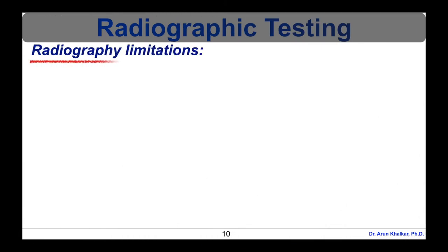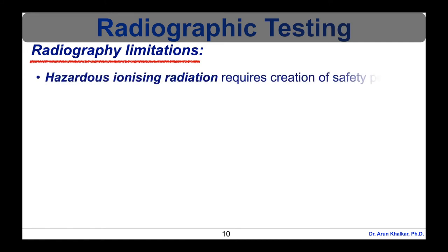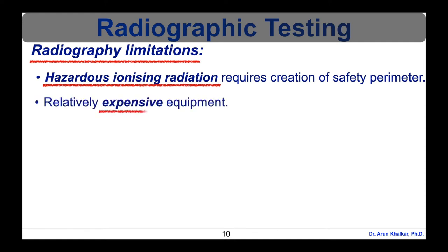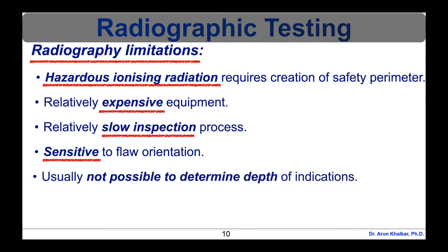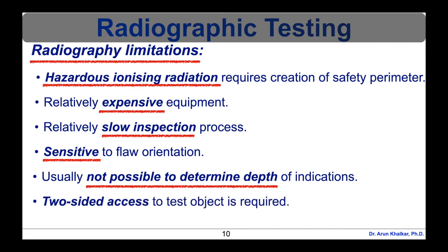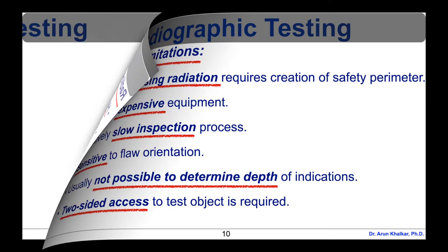Now let's see the limitations of radiographic testing. Radiographic testing uses hazardous ionizing radiation which requires creation of safety perimeter. The equipment is relatively expensive. Radiographic testing is relatively slow, so it is time consuming. This testing is very sensitive to flaw orientation. Usually it is not possible to determine the depth of indications. In radiographic testing, two-sided access to test object is required. These are the several limitations of radiographic testing.